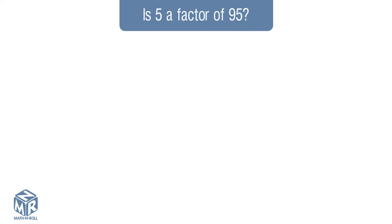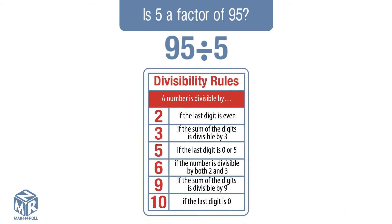Let's try another example. Is 5 a factor of 95? 5 will be a factor of 95 if we can divide 95 by 5 without a remainder. This time, we're going to use divisibility rules to solve. We find 5 on the table because we're dividing by 5. The divisibility rules table states that a number is divisible by 5 if the last digit is 0 or 5. The last digit of 95 is 5, so 95 is divisible by 5. Therefore, 5 is a factor of 95. Using divisibility rules is helpful because we are able to save time by avoiding long division.